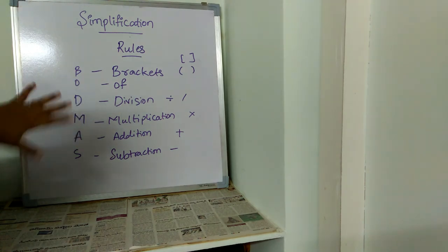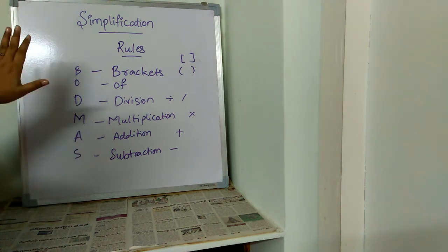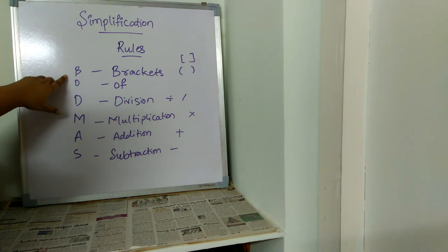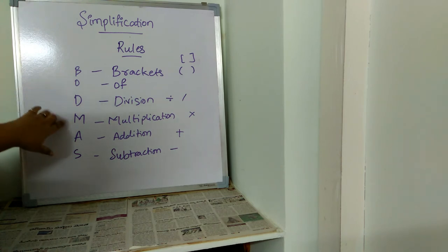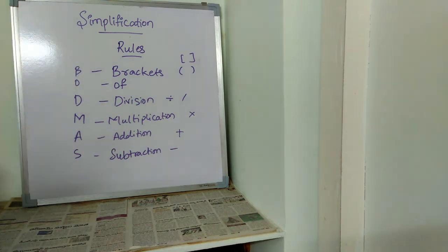For example, a problem has all these things - multiplication, division, addition, everything. First we need to solve the problem using brackets, then of, then division, then multiplication. In this sequence only we need to solve the problem.